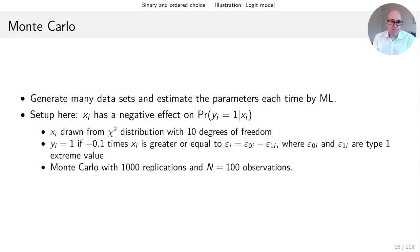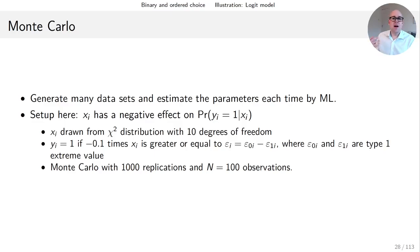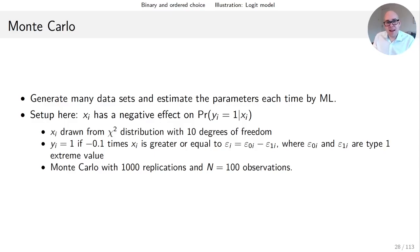Thereby I'm generating my observations y_i and then running a Monte Carlo with a thousand replications. Each time I'm generating data for a hundred observations — drawing x's, drawing epsilons, constructing y's, and estimating parameters. I do this a thousand times, ending up with a thousand estimates of my parameters. This is a very simple model because there's actually no intercept — x_i beta is really just a scalar x_i times beta.